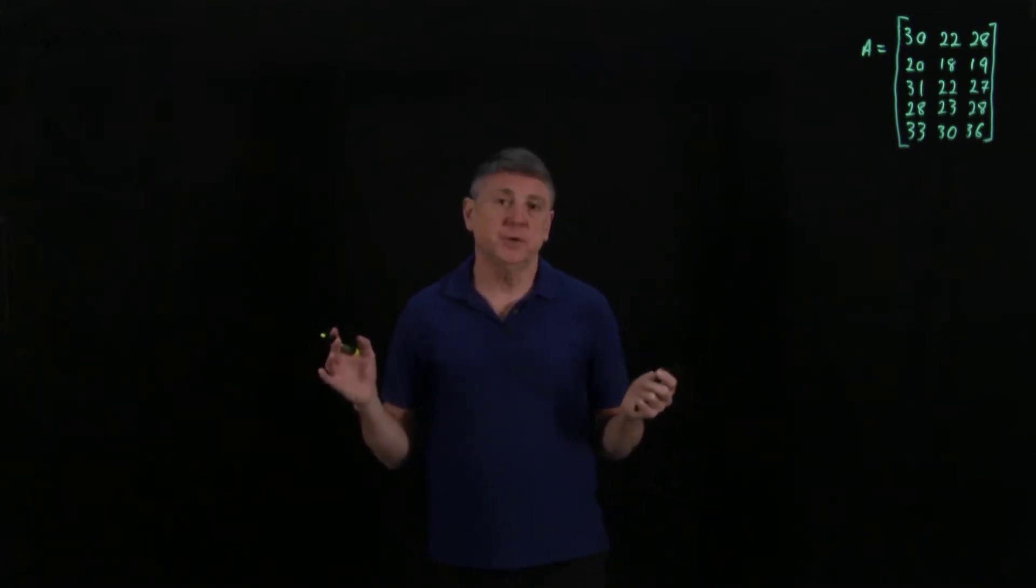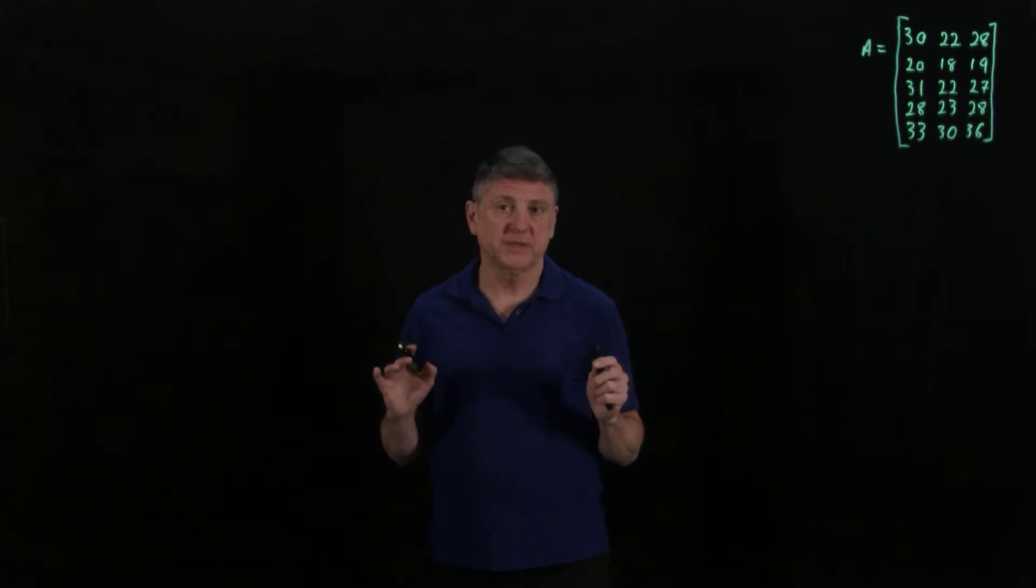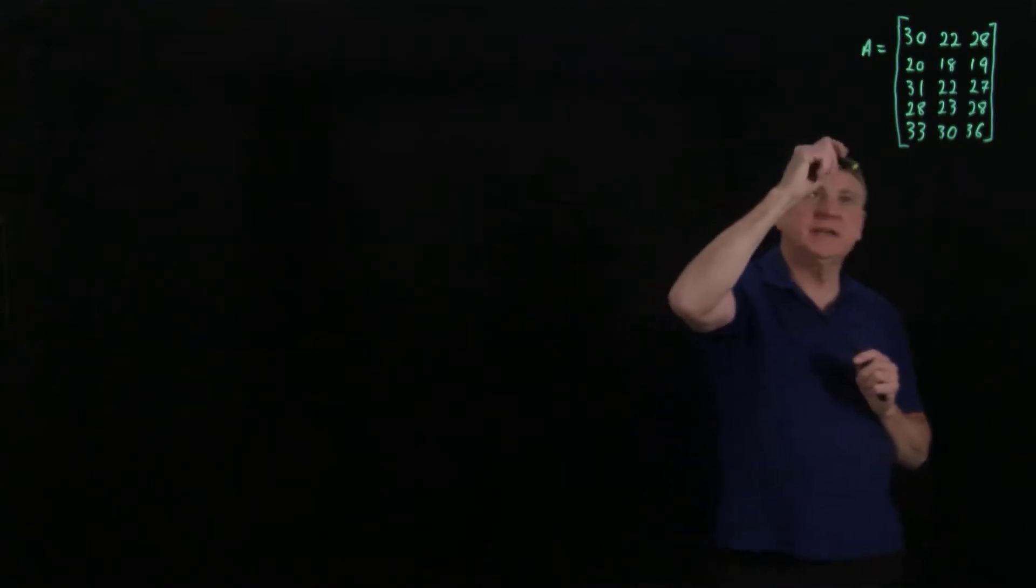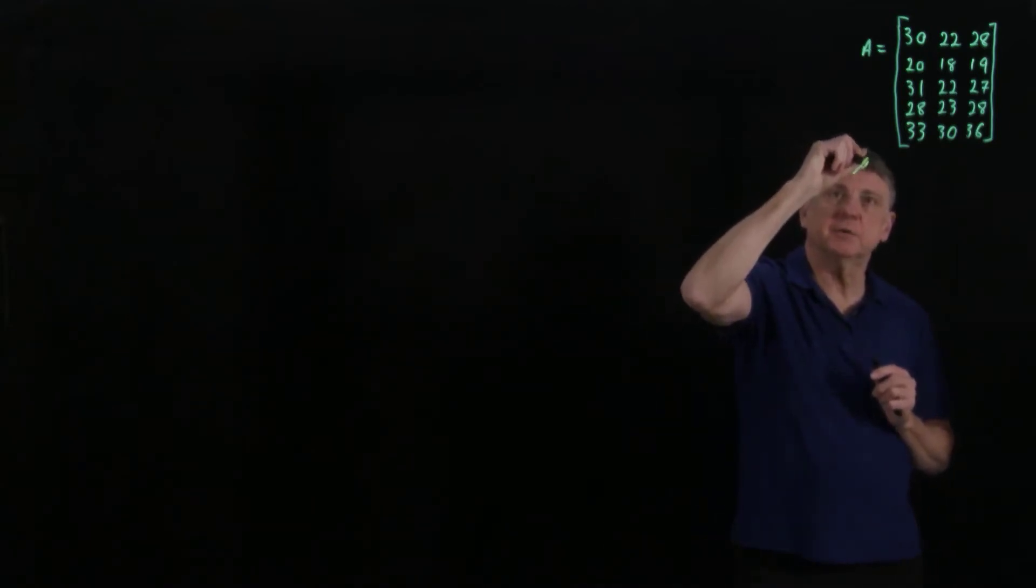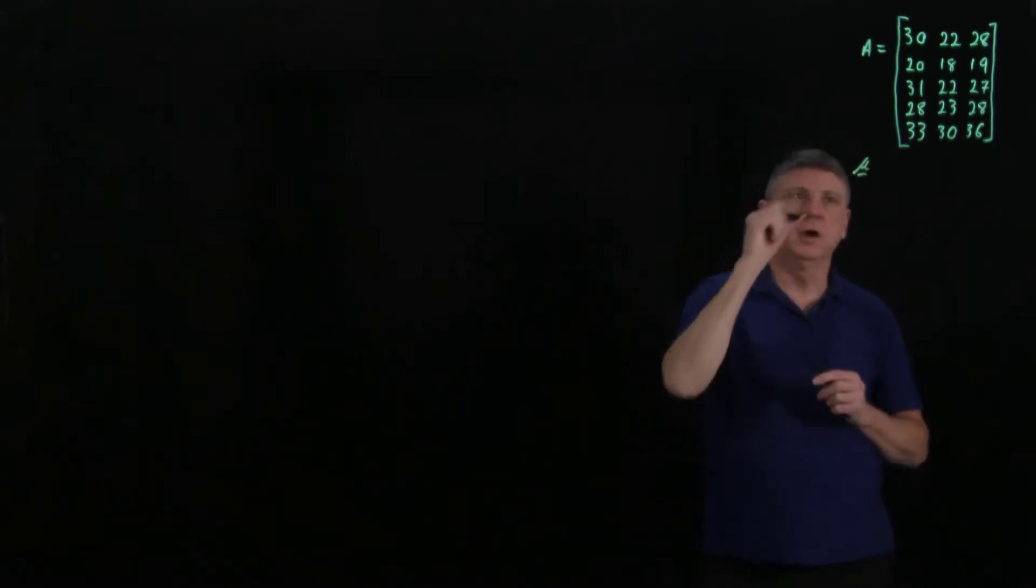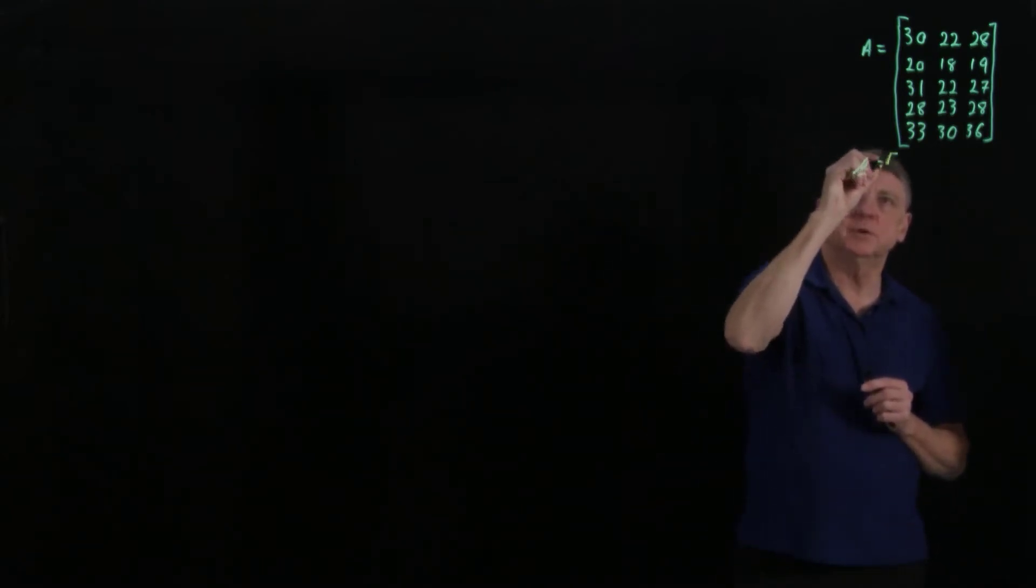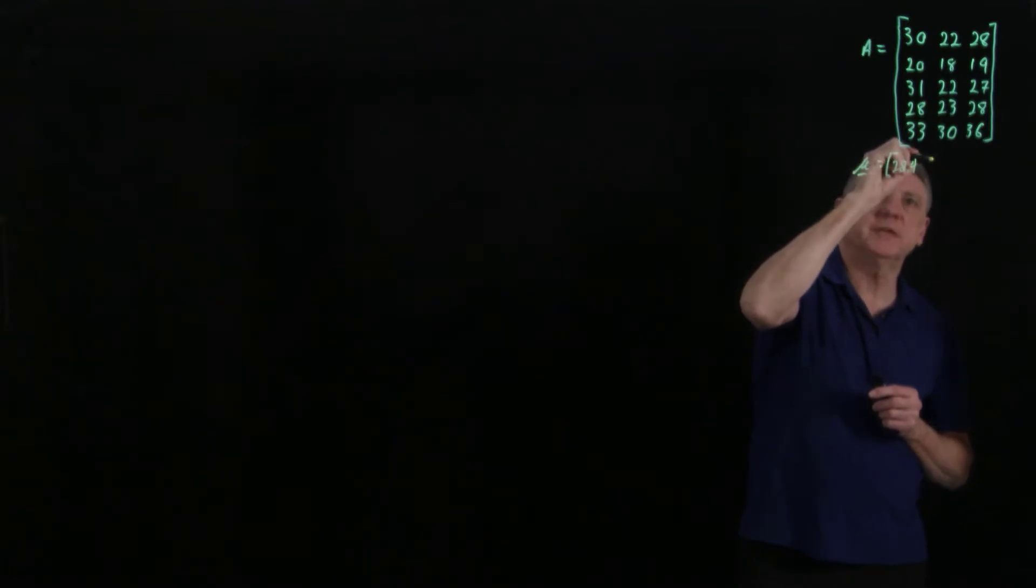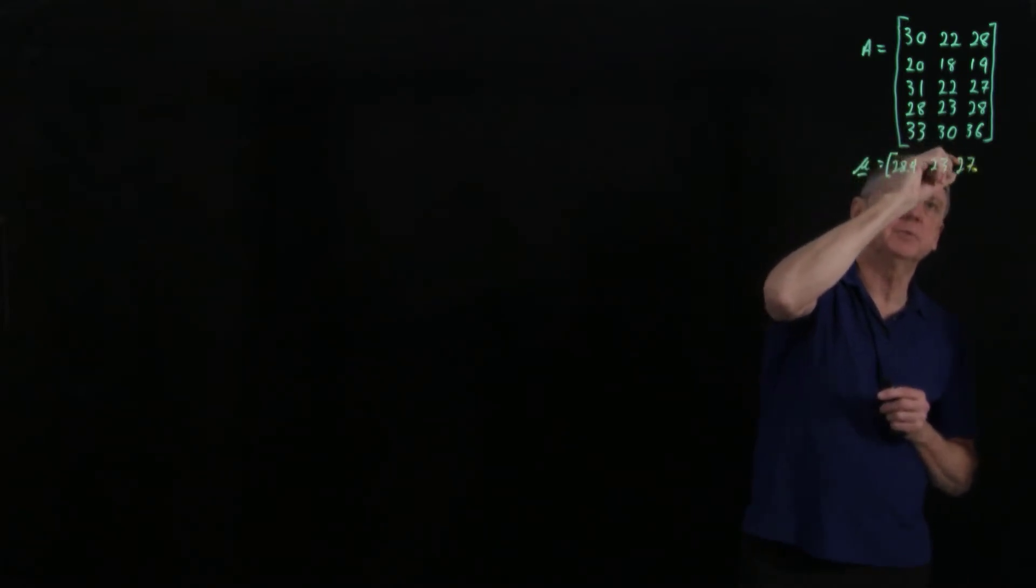The first thing we do in principal components analysis is make the data zero mean. That means we need to calculate the means. The means - I like to put an underscore when something's a row - will be 28.4 for the first one, 23 for the second, and 27.6 for the third.